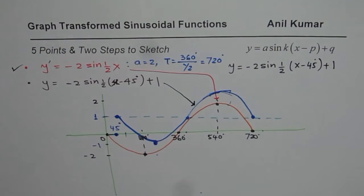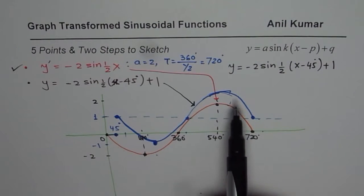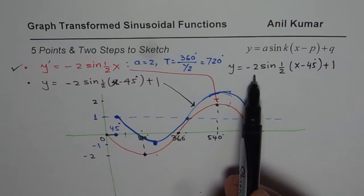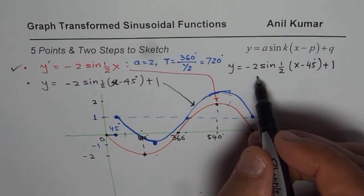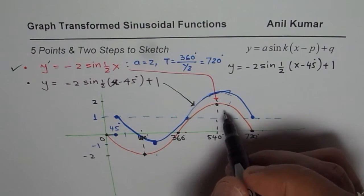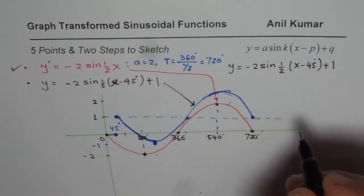So the two steps are, in the first step, incorporate the stretches, reflections, and horizontal and vertical stretches and compressions. In the second part, incorporate horizontal and vertical translations. So that is how we get.